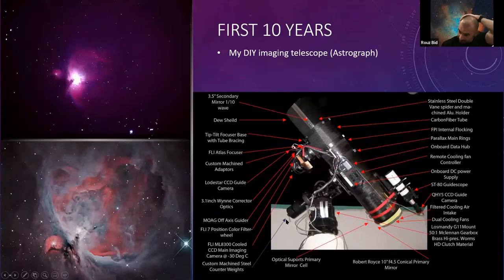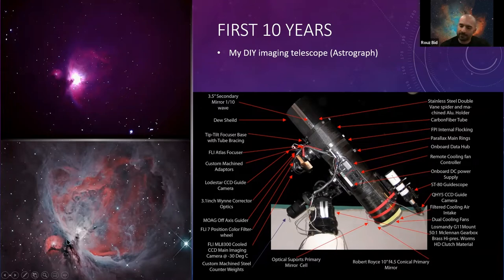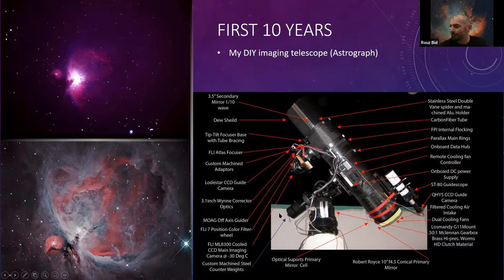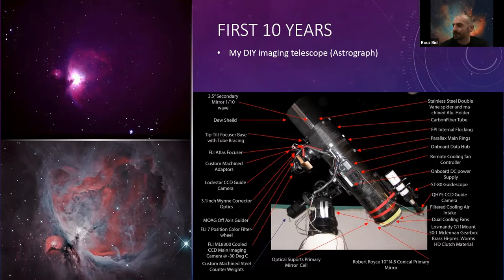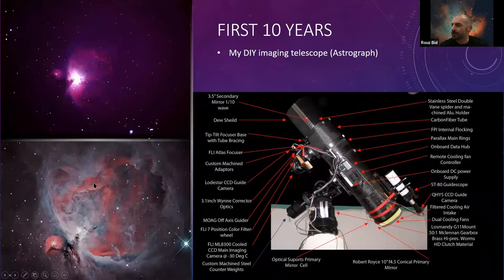This was ten years' worth of progress in one slide. This was the first deep sky picture I took with the DSLR — I was very excited, it was in the early 2000s and that really got me hooked. Ten years on, I took this narrowband image of Orion. I was proud because this was made with my own telescope — I actually built an astrograph. Robert Royce made very nice optics mirrors and sent me a 10-inch; I got carbon fiber fabric and made a mold. It took 10 years to get from this stage to this stage. The point is you have to be patient — it's not something you can master within three months of astrophotography.